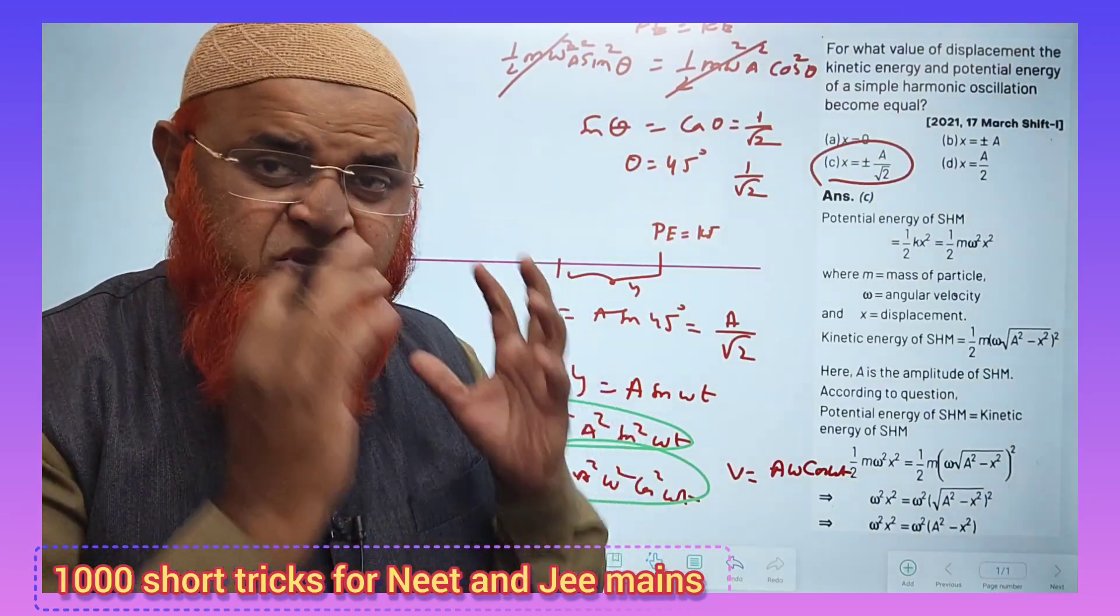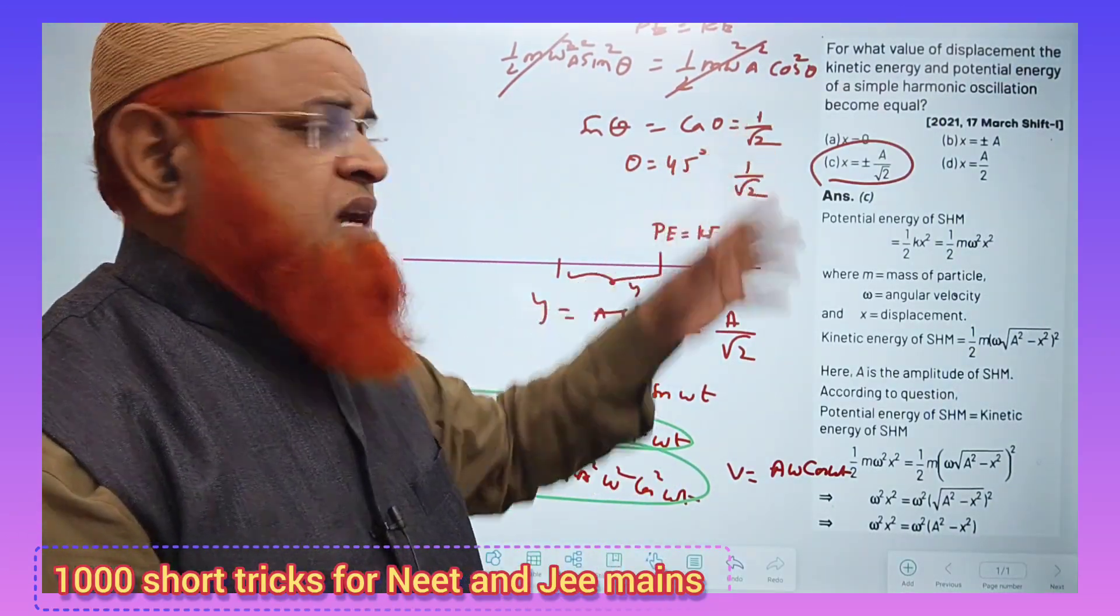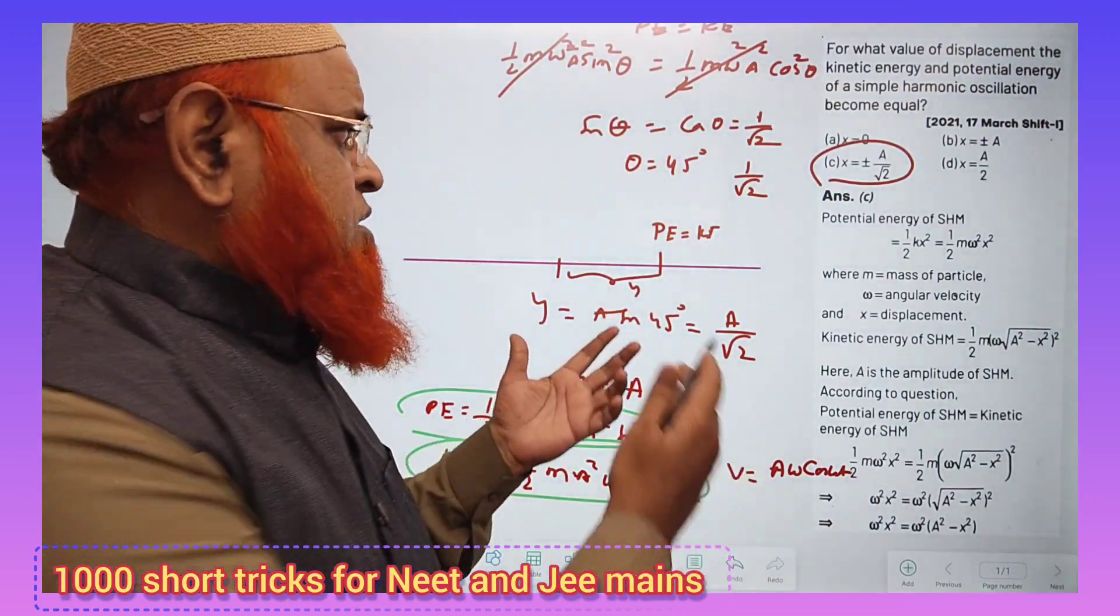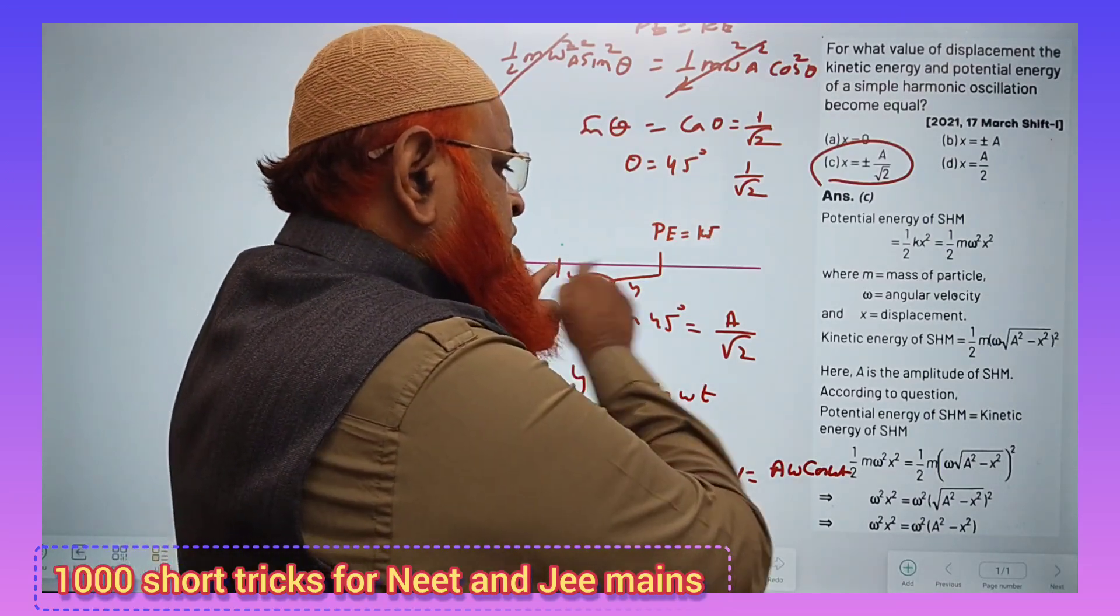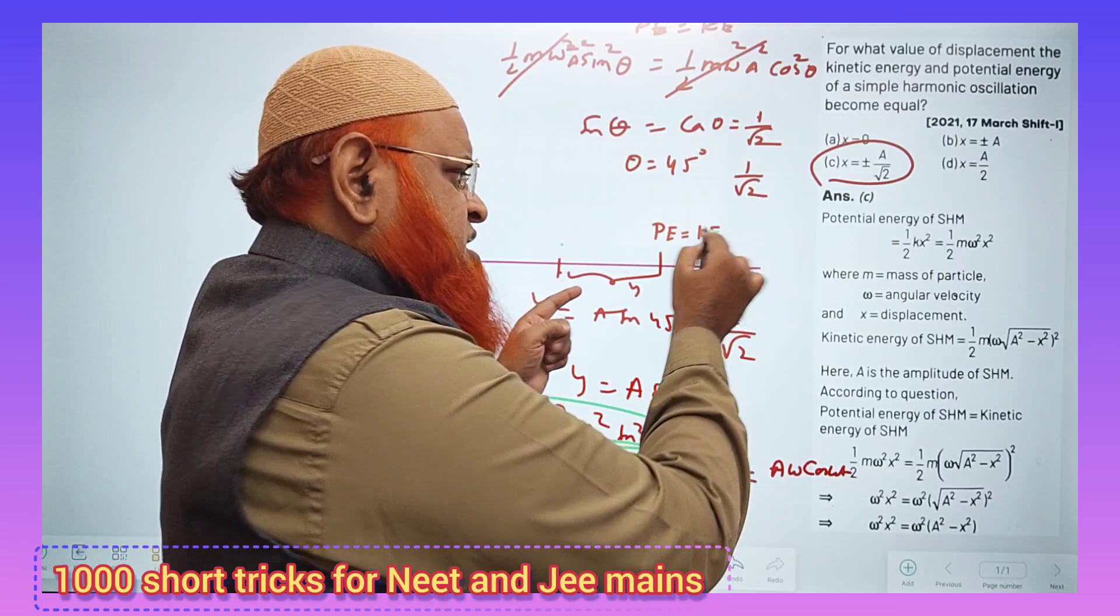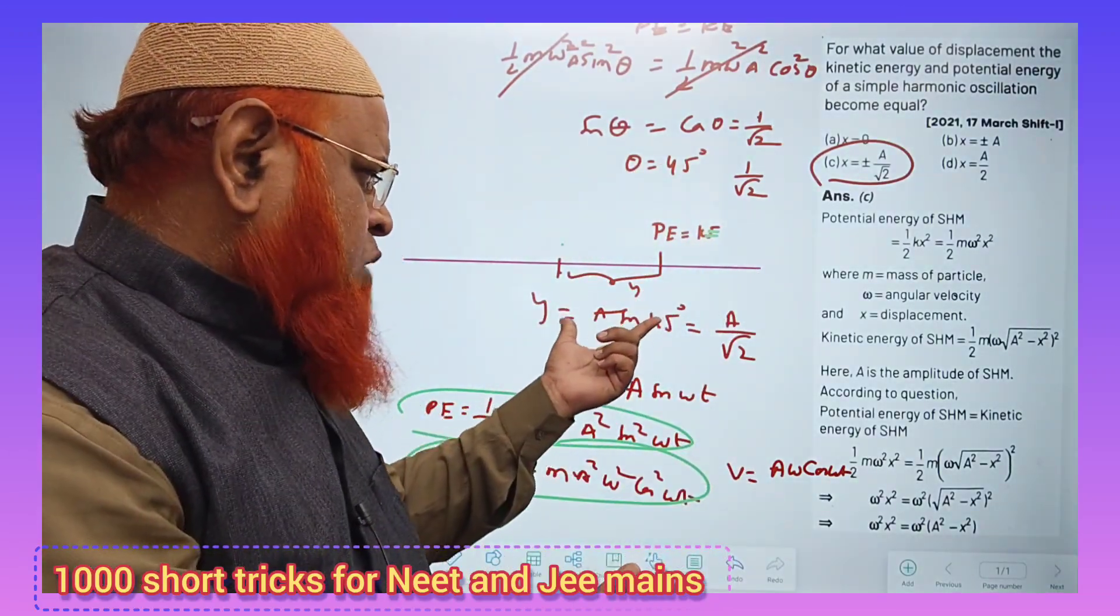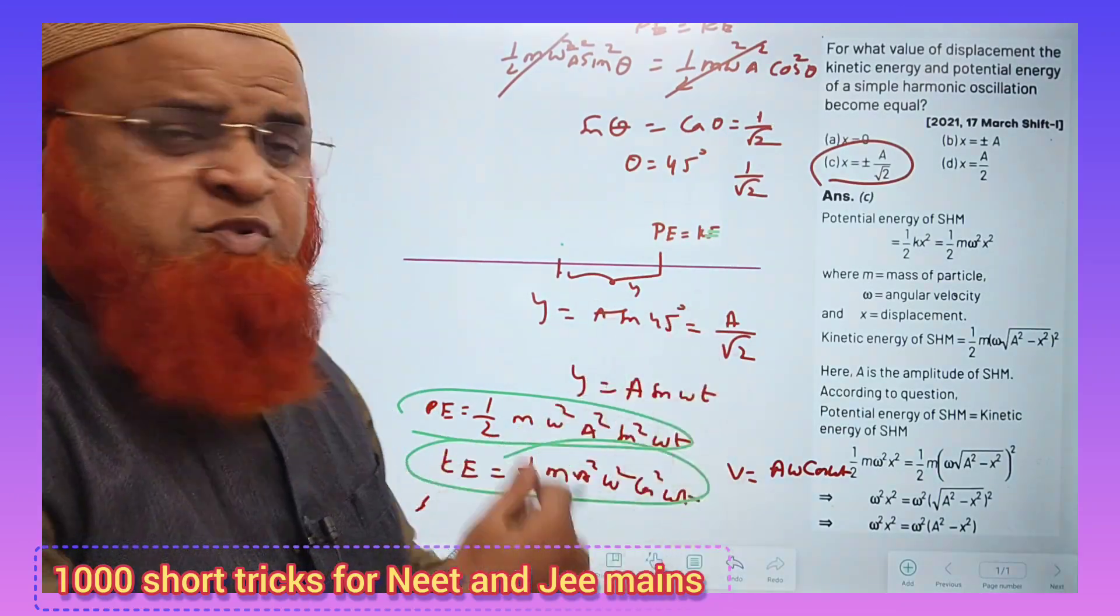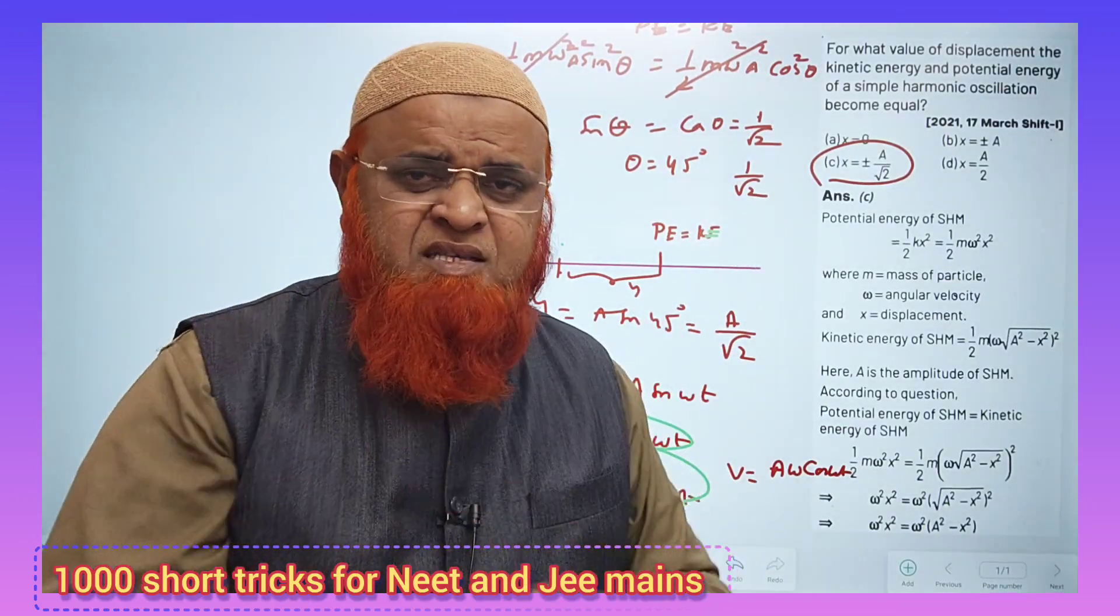sin theta and cos theta will be same only when it is 45 degrees. And for 45 degrees, sin theta cos theta value is going to be 1 by root 2. And that's why your displacement from the mean position to an extreme position, how much will be the displacement where potential energy is exactly equal to kinetic energy? That y equals a sin 45. Because already we got an angle of 45, you should get the answer a by root 2. A simple shortcut.